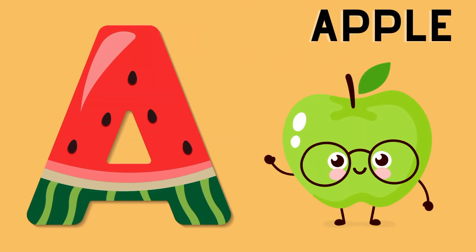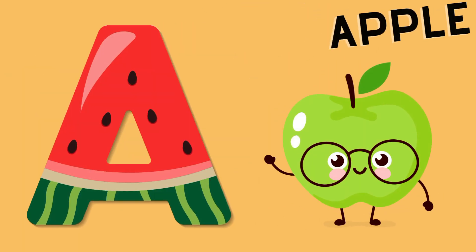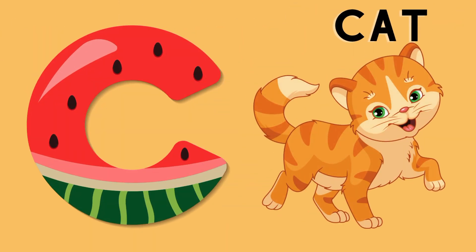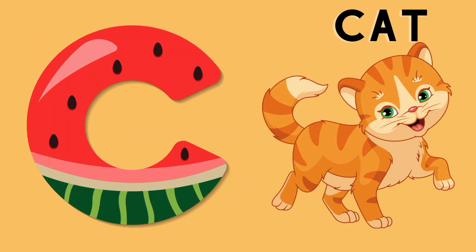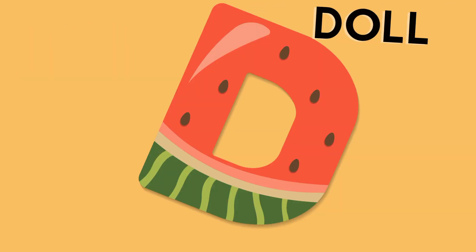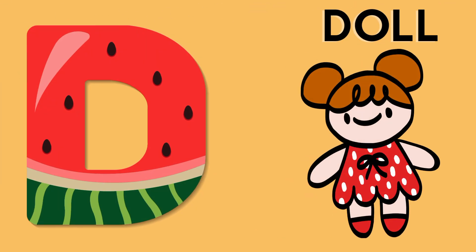A is for apple, a-a-apple. B is for ball, f-f-ball. C is for cat, c-c-cat. D is for doll, d-d-doll.